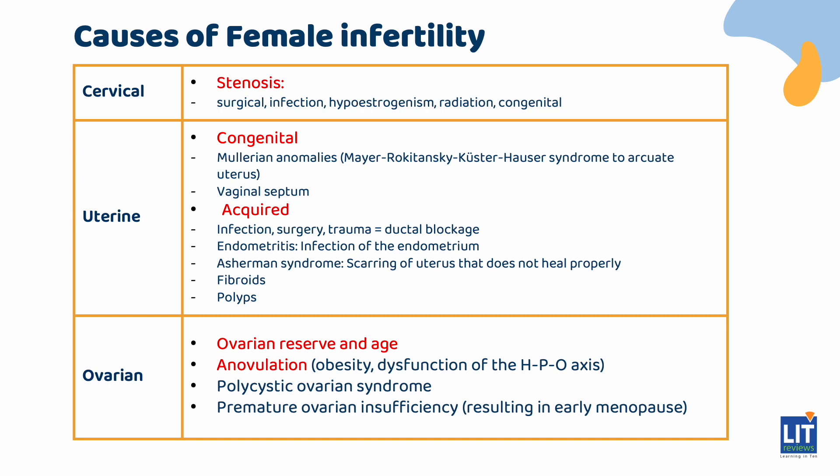Uterine factor can be congenital or acquired. Congenital problems can result from Müllerian anomalies, which can affect the entire tract by either deleting or duplicating any part in both vertical or horizontal orientations. This can range from as mild as an arcuate uterus — a heart-shaped uterine cavity — to a vaginal septum creating two vaginal canals. Acquired causes include endometritis, Asherman's syndrome — scarring of the endometrium after a D&C — fibroids, polyps, and endometrial polyps projecting into the uterine cavity.